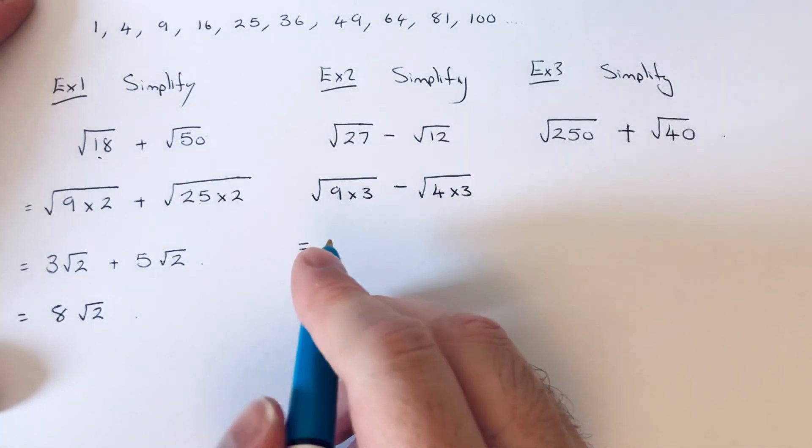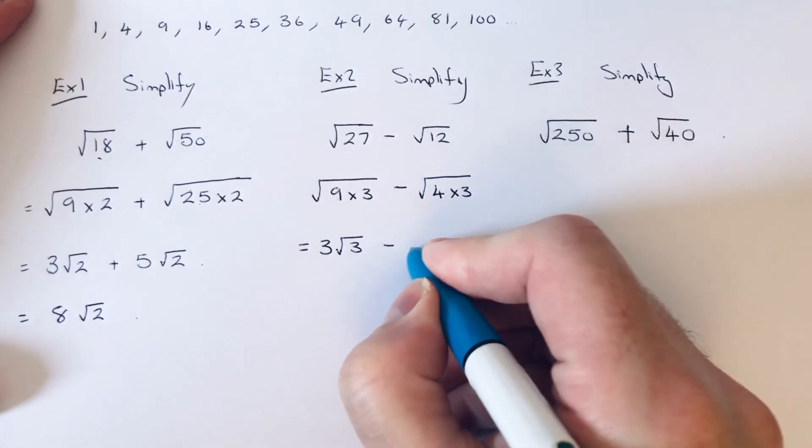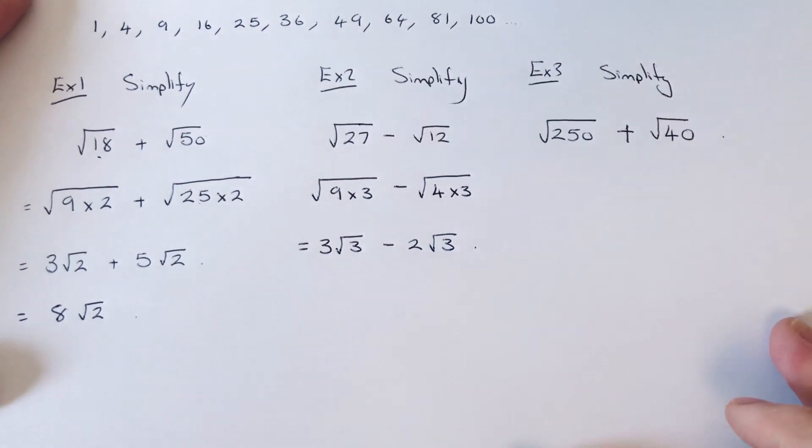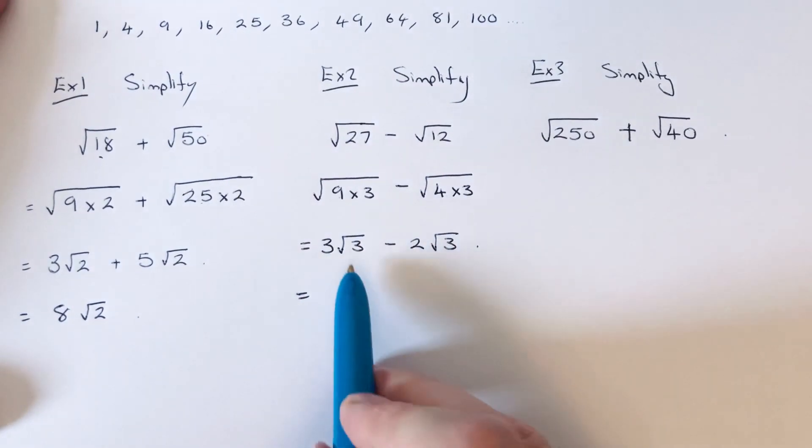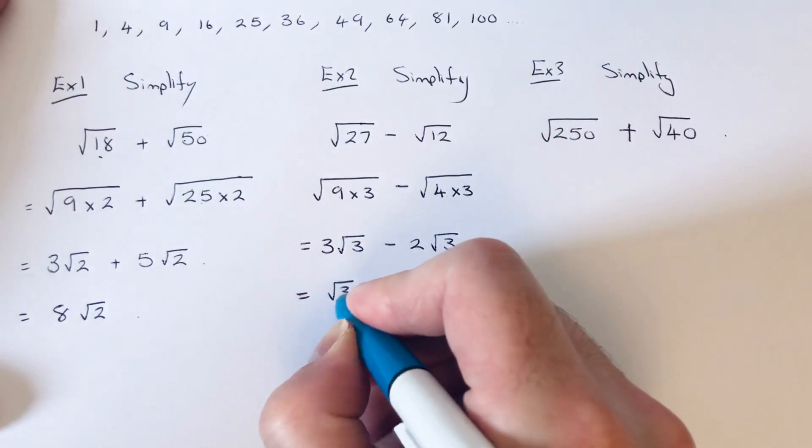So we can square root the 9 which is 3 but we can't square root the 3. We can square root the 4 which is 2 but we can't square root 3. So again we've made the numbers underneath the square roots the same. So we can take these away. So 3 root 3 take away 2 root 3 gives 1 root 3 which is the same as root 3.